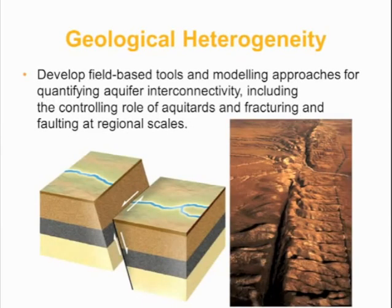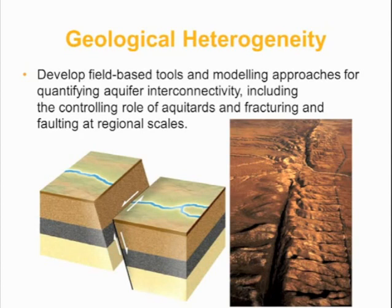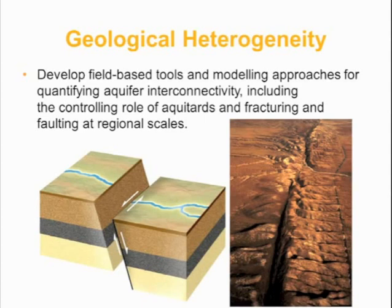Dealing with geological heterogeneity is a key issue for which we're setting up major projects. This includes the integrity of aquitards — the low-permeability clay layers in these systems — how permeable they are, and the role of faulting and fracturing. Can we quantify, in the presence of faulting and fracturing, the potential rates of movement of water, solutes, and chemicals to really understand transit times and length scales?